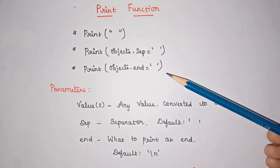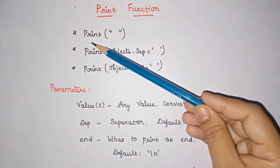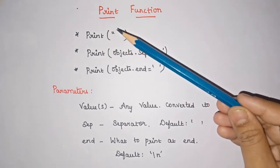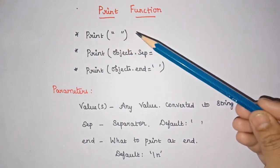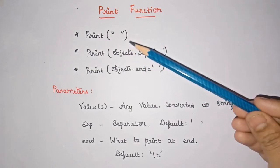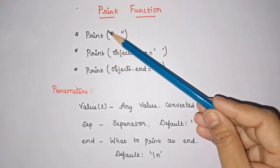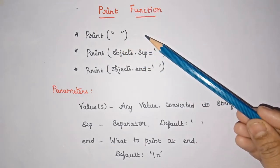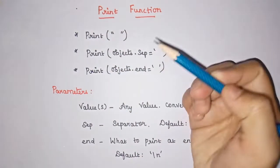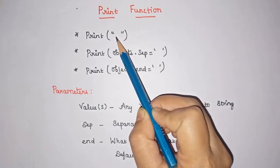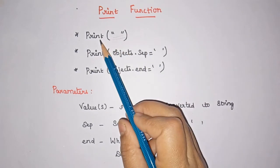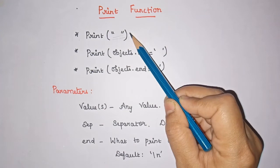These are some of the formats we can use for displaying output. In the first print statement, inside the bracket you have double quotes, where you can give any value — any number of values. Whatever is given inside this print function will be converted to string type, because we are using double quotes — everything inside will be converted into a string data type.